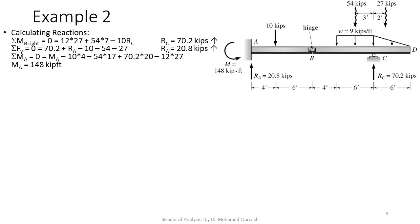Sigma FY equals zero: 70.2 plus RA minus 10 (concentrated load) minus 54 (resultant of rectangular load) minus 27 (resultant of triangular load) equals zero. This gives RA equals 20.8 kips. Note that in an exam, nobody will give you these resultants — you must calculate them yourself.